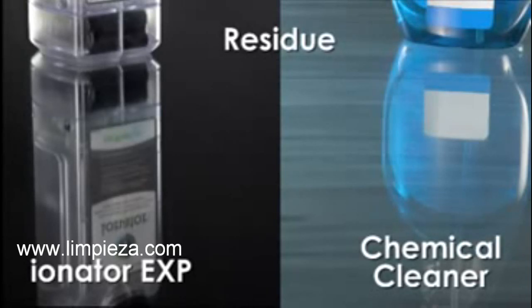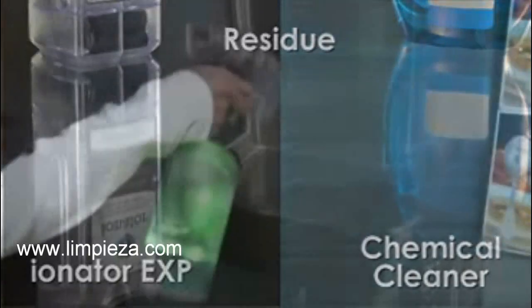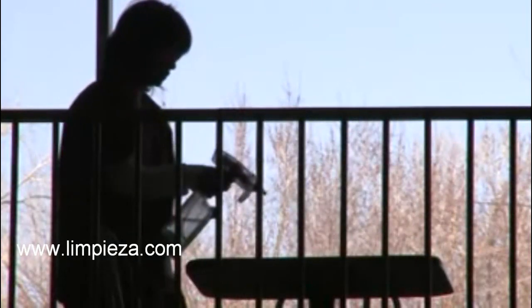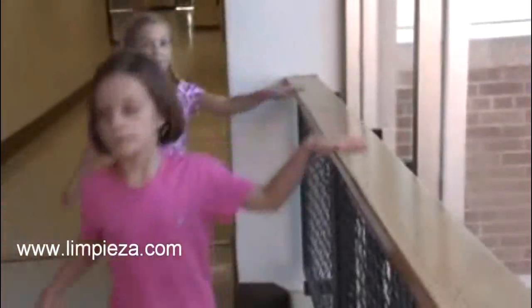Notice the residue left behind by the chemical cleaner. This is the residue that stays on the touch points you clean: hand railings, doors, chairs and cafeteria tables. The Ionator EXP leaves surfaces safe to touch and residue free.